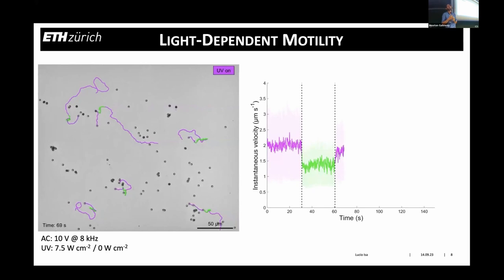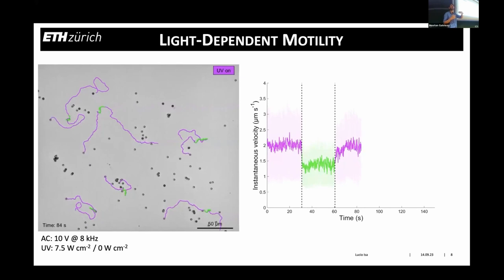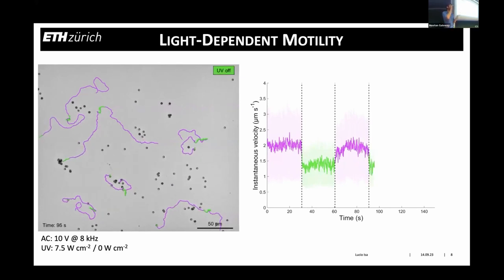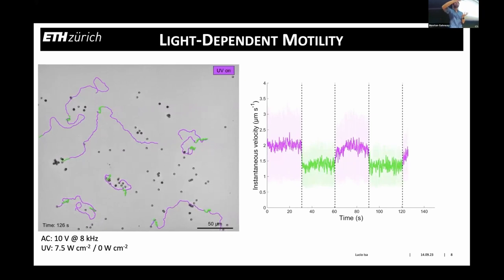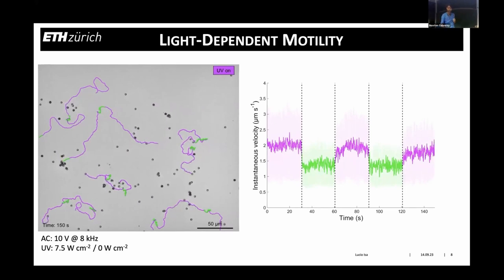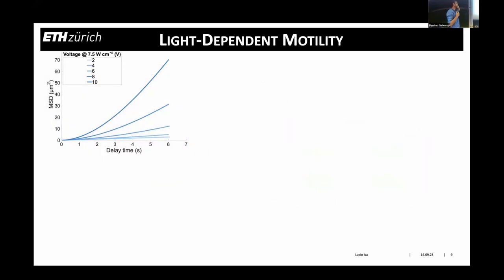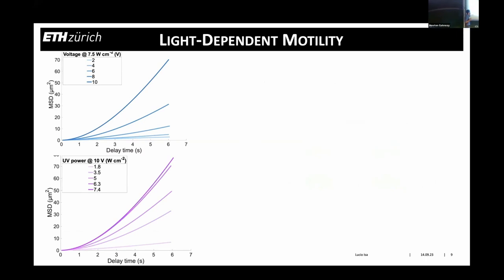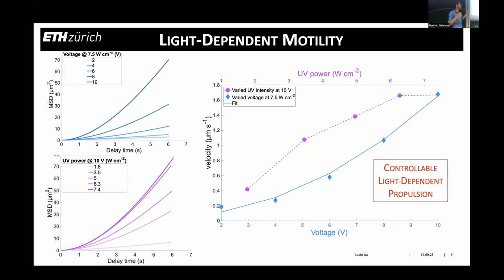This is different from the case of photo-catalytically active titanium swimmers, where the UV light is the means by which propulsion takes place. In these experiments the electric field is constant — 10 volts at kilohertz frequency, fixed throughout. We are driving the particles with the same driving force and reconfiguring their material properties by shining UV light. This is reversible over multiple cycles. We can fix the UV illumination and change the voltage — and the velocity scales — or keep the voltage fixed and change the UV intensity, and again we see a scaling of the velocity. We have established a controllable, light-dependent propulsion for these systems.